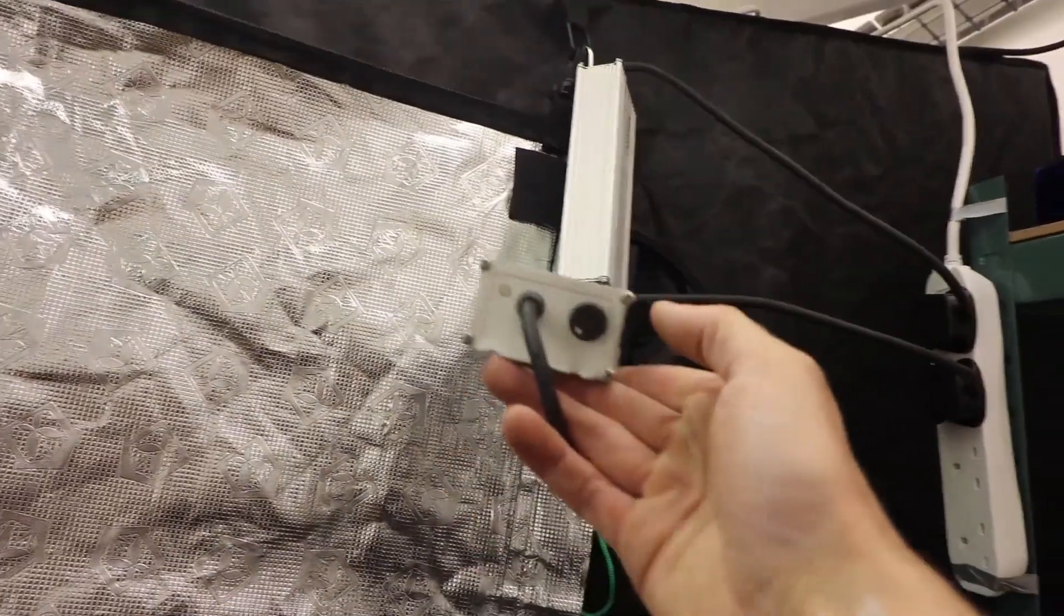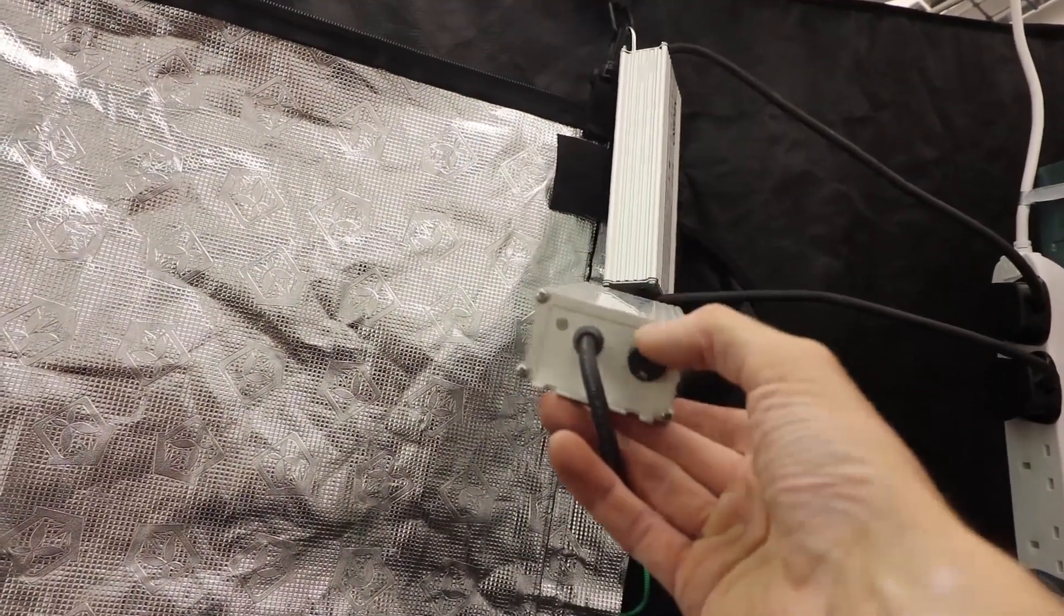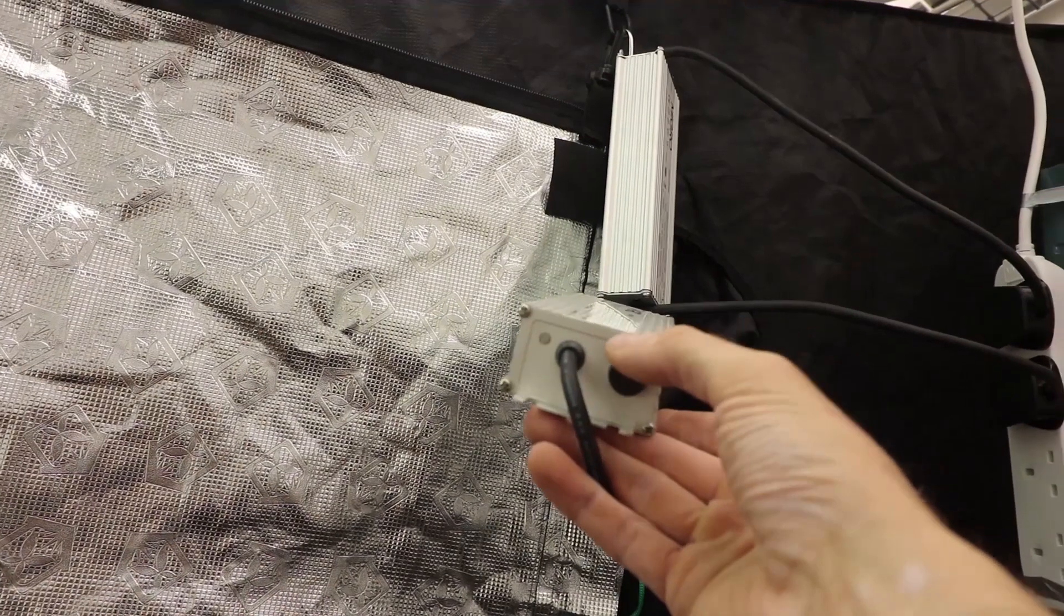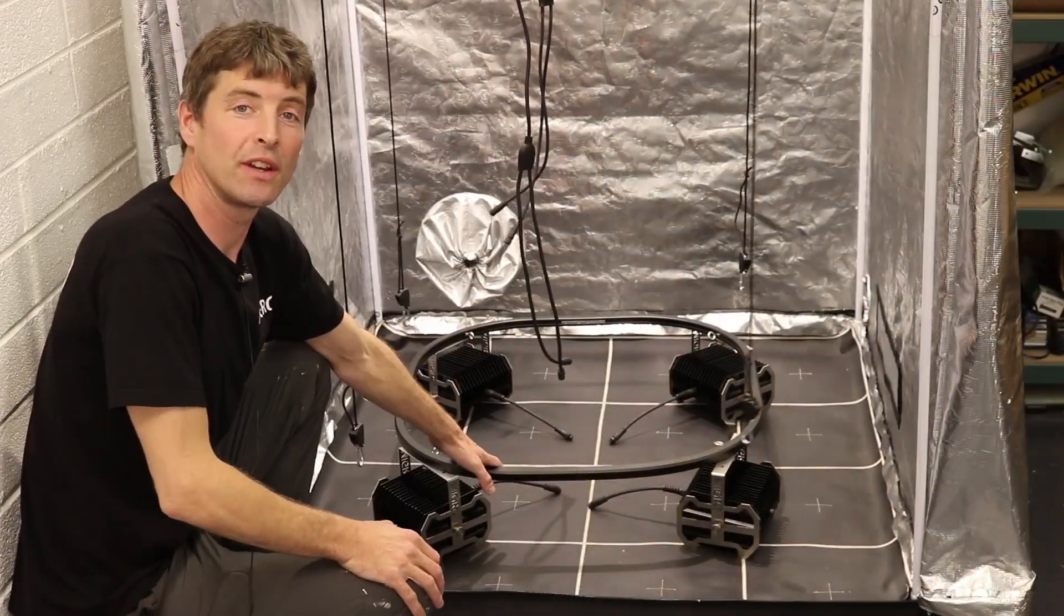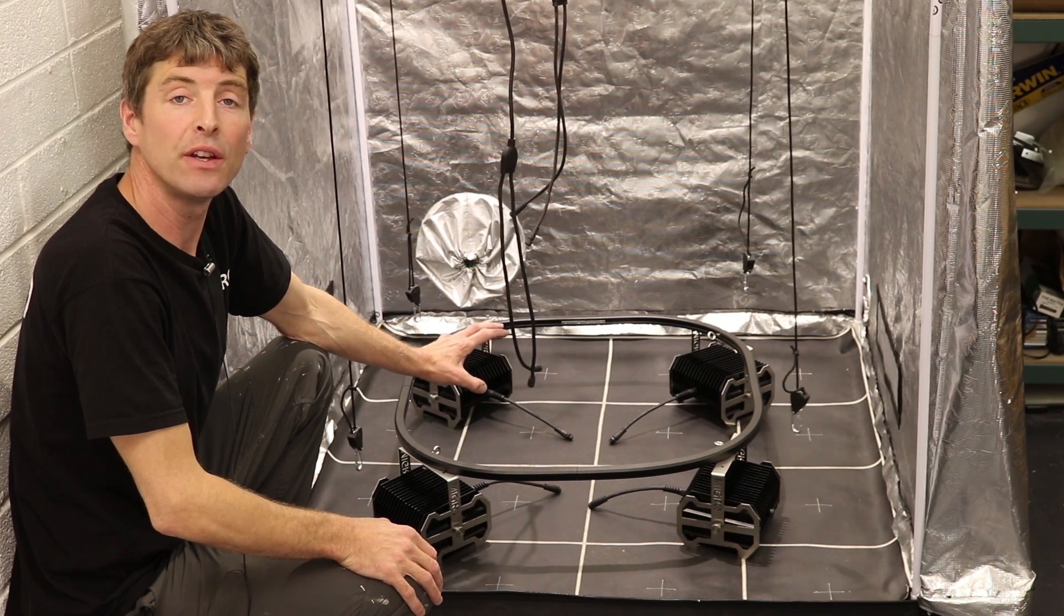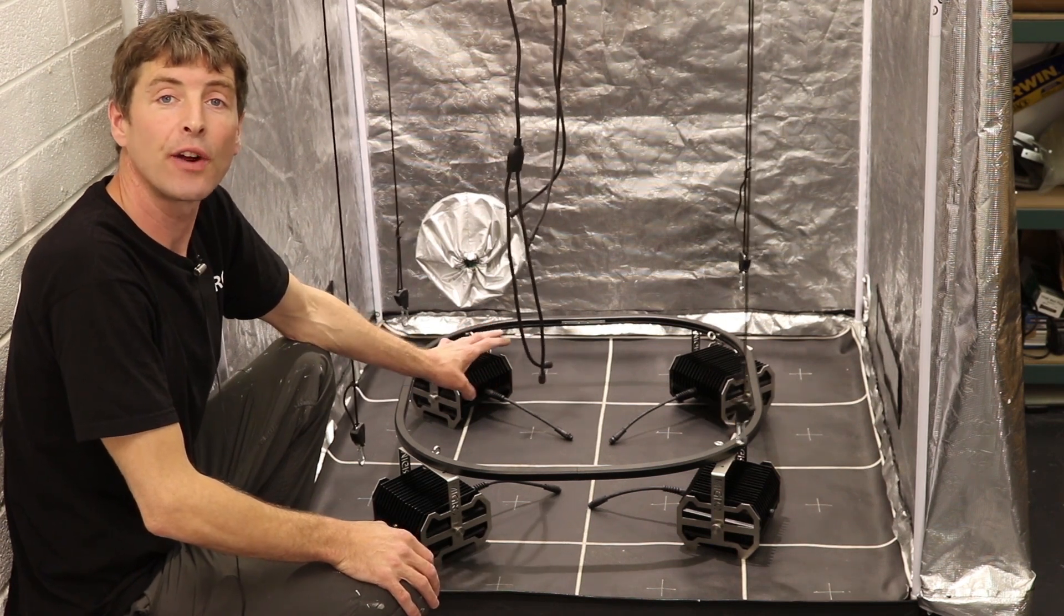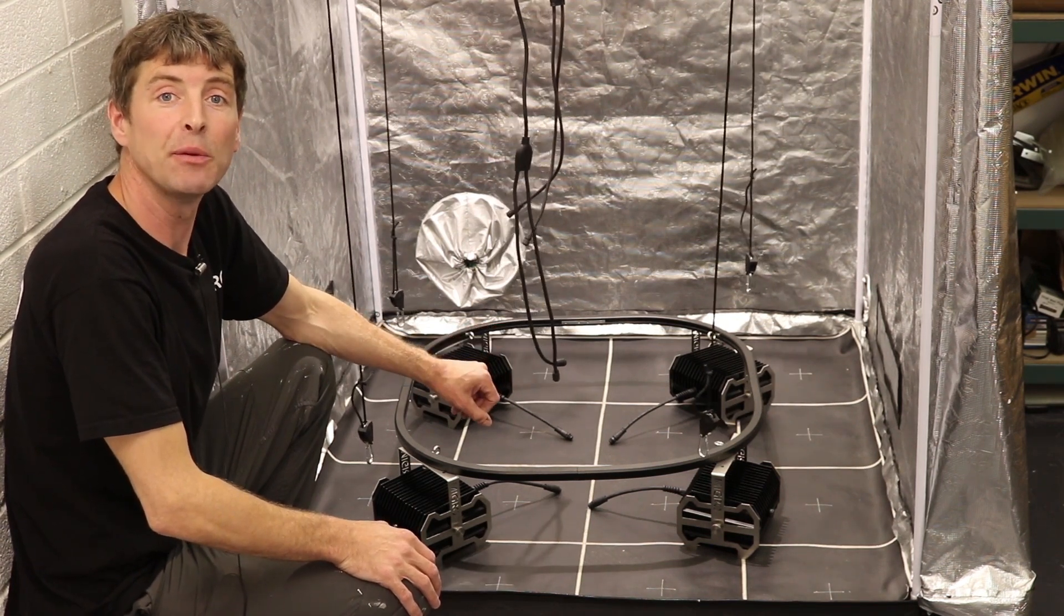So the drivers are hanging out the side of the tent to keep the grow room and the drivers as cool as possible. We have our MIGRO 400 sitting in the tent and now we are ready to connect up the four hangers and the four connector cables onto the lights.